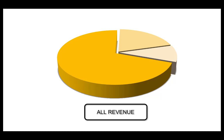To achieve this, you first need to define thresholds for the segments. For example, you can say that the products with the highest numbers bringing in 70% of the overall revenue should be in segment A, those bringing in 20% should be in segment B, and the ones bringing in the remaining 10% should be in segment C.